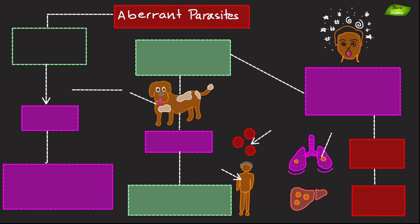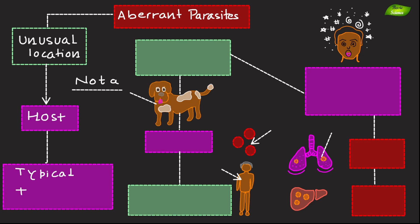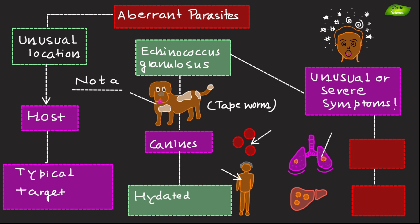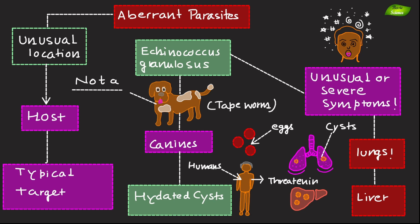Aberrant parasites infect an unusual location in the host or a host species that is not their typical target, often causing unusual or severe symptoms. An example is Echinococcus granulosus, a tapeworm that usually infects canines but can cause hydatid cysts in humans if the eggs are ingested, leading to cysts in organs such as the liver or lungs, which can be life-threatening if not treated in time.